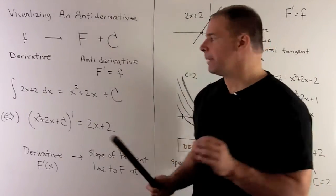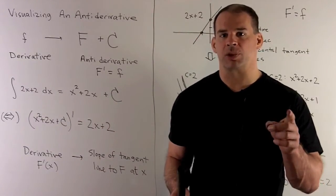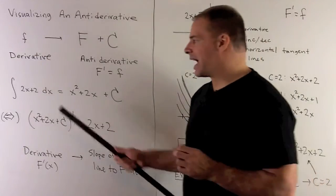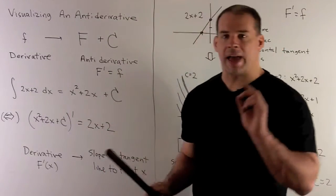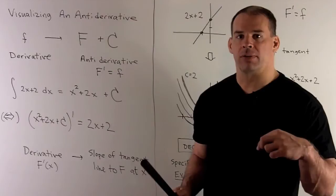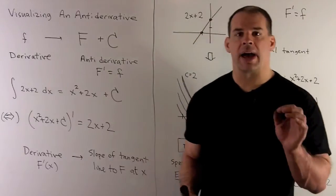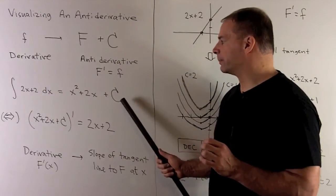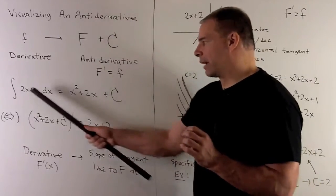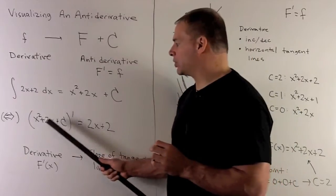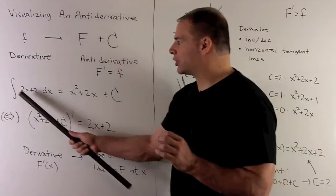Our rule: if we have a power of x, and that power is not minus 1, we add 1 to the exponent and flip it over. If we have a constant, we multiply by x. So here, x to the 1 — add 1 gives a 2, flip it over, the 2s cancel, giving x squared. For the 2, we get 2x, then we add a constant of integration. The result is x squared plus 2x plus c. If we take its derivative, we get back 2x plus 2, which matches our integrand.